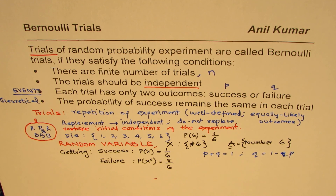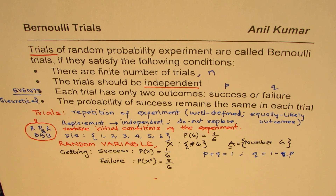The questions going forward will be on distributions where experiments will have to be defined so that you get output as success or failure, and then use some mathematical formulas which are easy to apply to get the probability. In this video I hope you understand the very basic concept. We'll elaborate more on this later when working with binomial distribution. I hope this gives you a basic concept. You can always share and subscribe to my videos. Thank you and all the best.